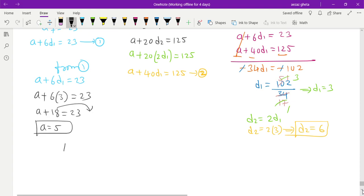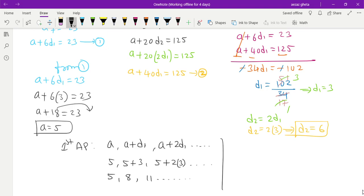For the first AP: a, a + d1, a + 2d1... So a = 5, then 5 + 3 = 8, then 5 + 6 = 11, and so on. This is the first AP: 5, 8, 11... The second AP you should find yourself and message me in the comments. Hope you understood this. Thank you so much everybody.